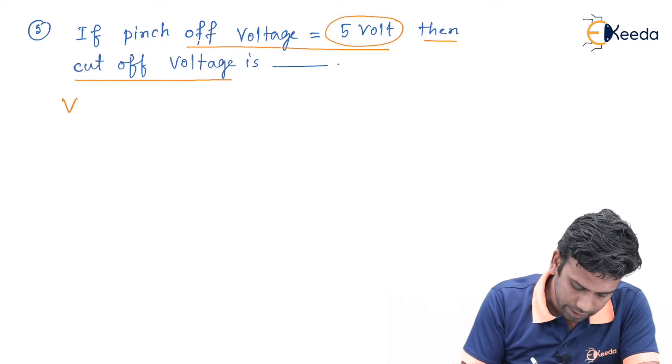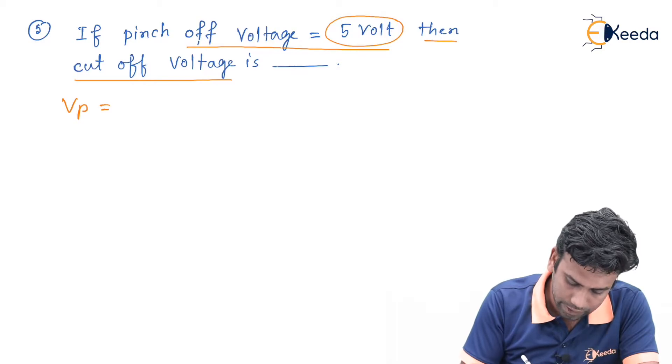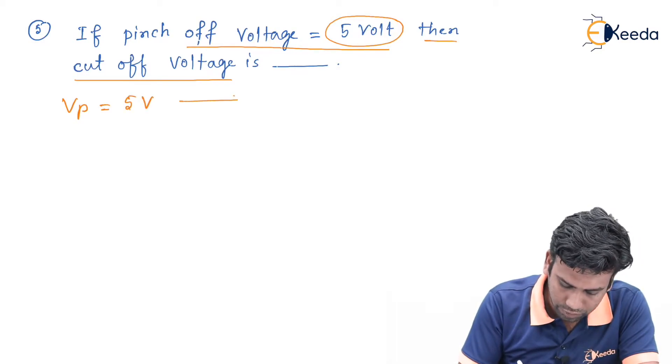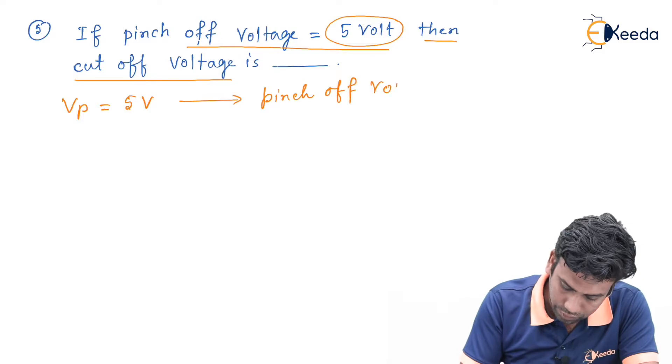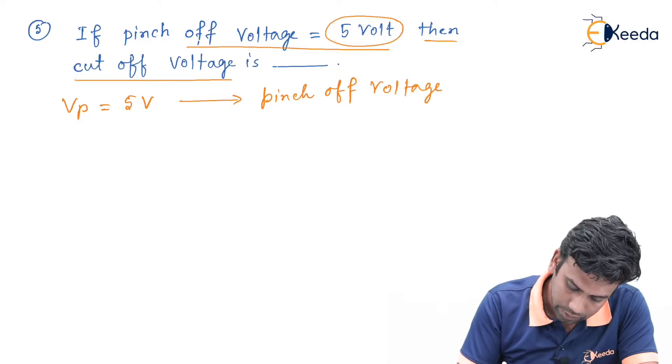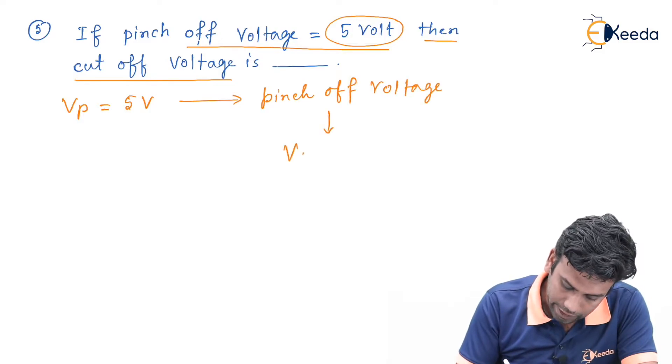As we know that the pinch-off voltage here is given by 5 volt, and we also know that the pinch-off voltage is also known as gate-to-source voltage cutoff.